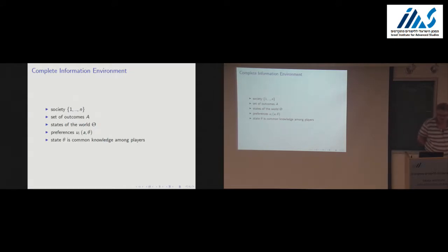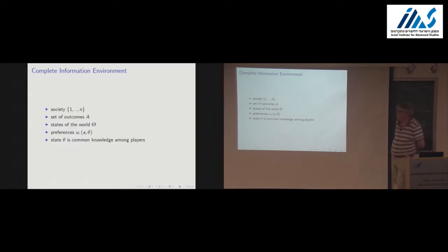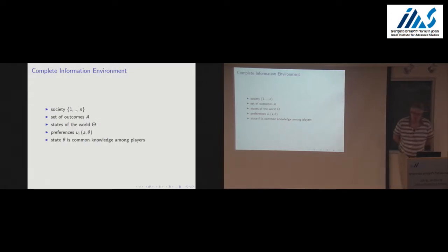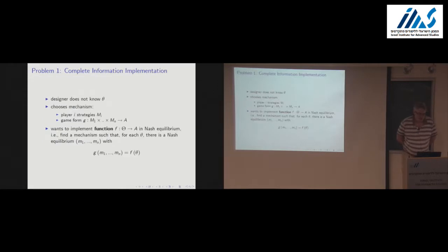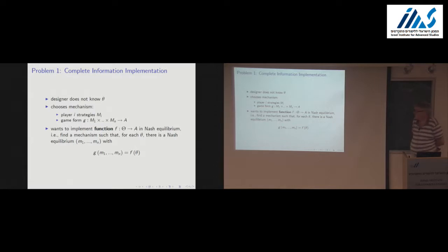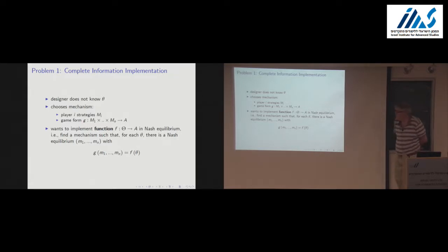Let's review what Eric did. For a complete information environment, suppose we have a society, a group of people, a set of outcomes, a set of states of the world. Each individual has preferences over these outcomes, and there's complete information — common knowledge among the players of what the state of the world is. The designer does not know what theta is, and would like to choose a mechanism achieving a desired outcome. A mechanism specifies a set of strategies — messages — and a game form mapping messages to outcomes.